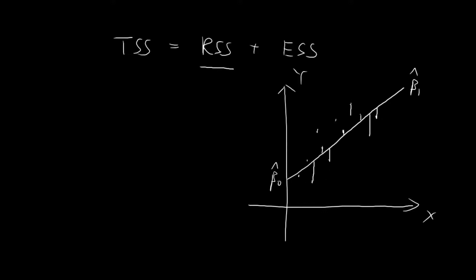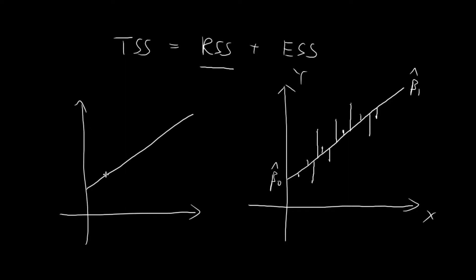If your RSS is very small, that means all of these points stick very close to your regression line, and that will indicate a good fit. If your RSS is very big, that means all of these points are very far away from your regression line, and so that would indicate a very bad fit. An extreme example would be when your RSS is equal to 0 — in that case, all of your points will be lying on the regression line, which would indicate a perfect fit. The larger your RSS, the worse your fit is going to be.